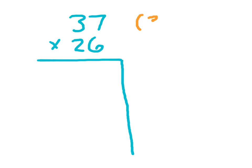So 37 is just 30, 3 tens, and 7 ones. 26 breaks down into 20, plus 6, and then we're still multiplying those two things together.